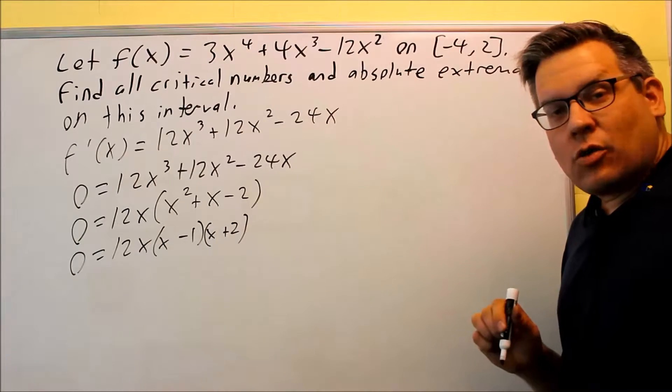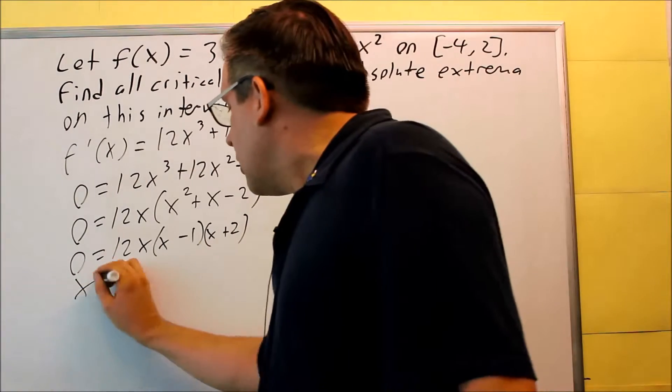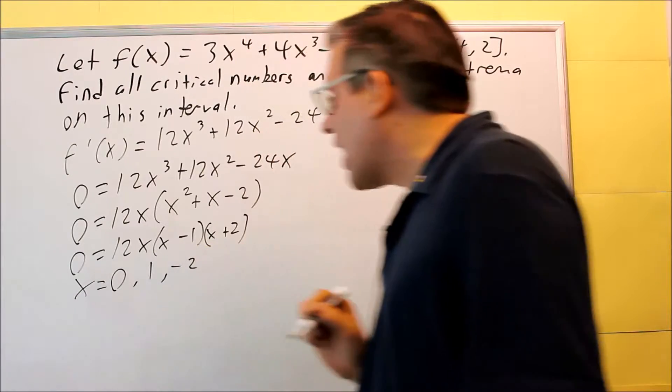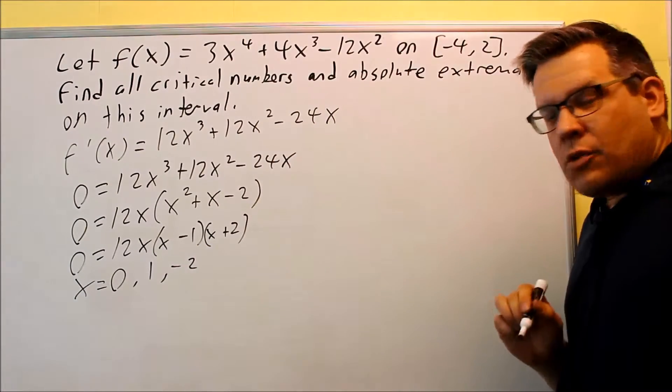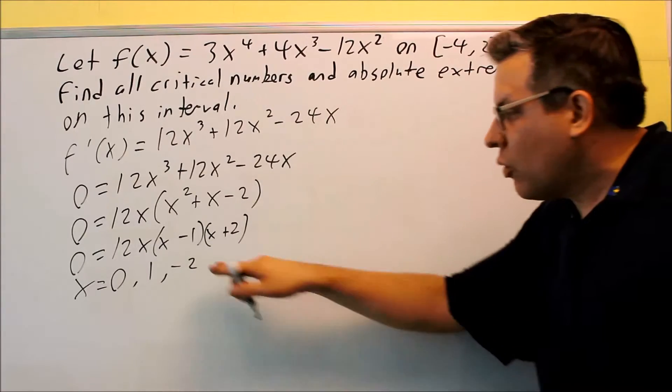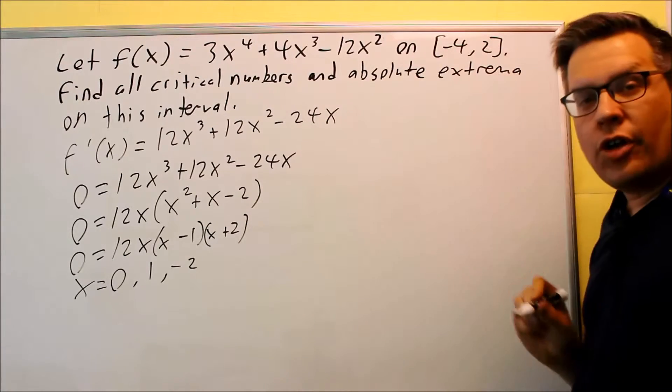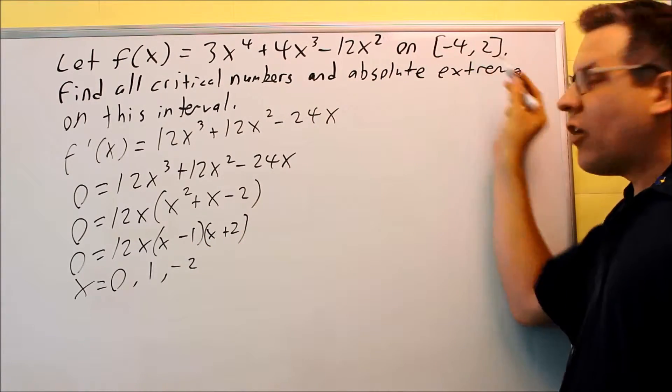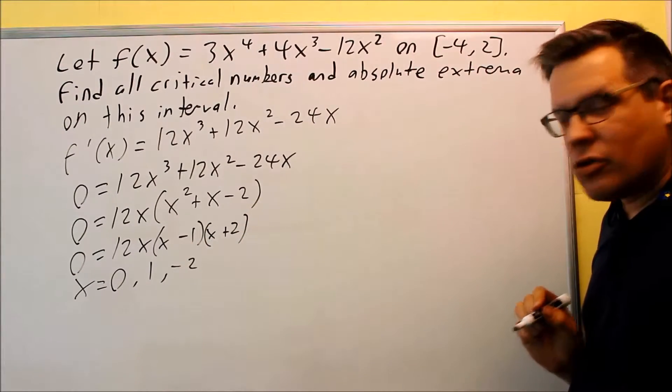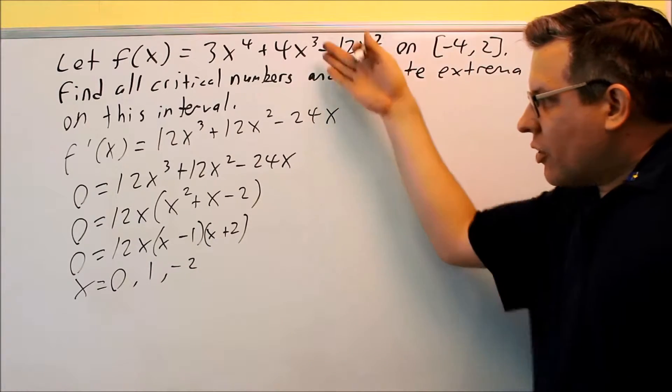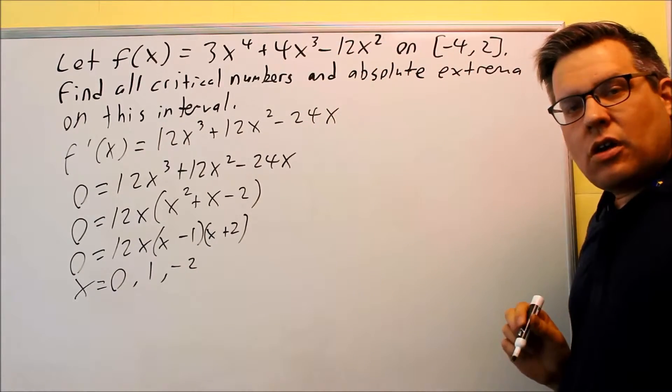You'll set each one of these factors equal to zero. To get the answers, you'll get x is 0, 1, negative 2. Now, these are critical numbers, but you're only going to include the ones that happen to fall on your interval. We look at the critical numbers we get. We notice that they all fall on that interval between negative 4 and 2, so we're actually going to include all these. That was actually all step number 1.